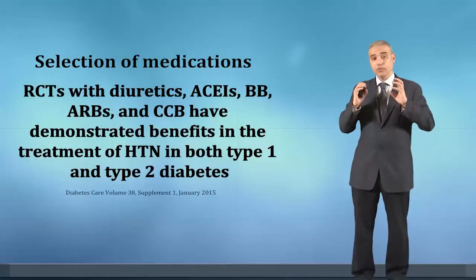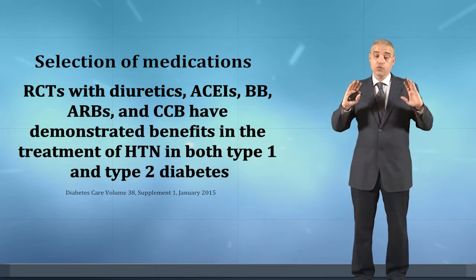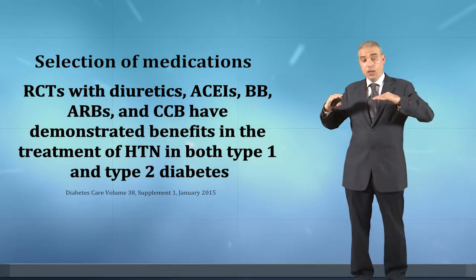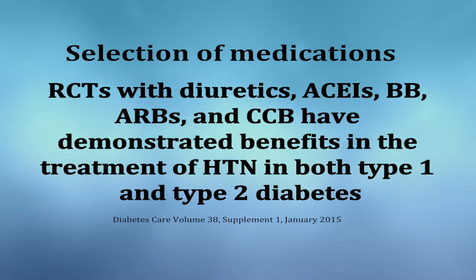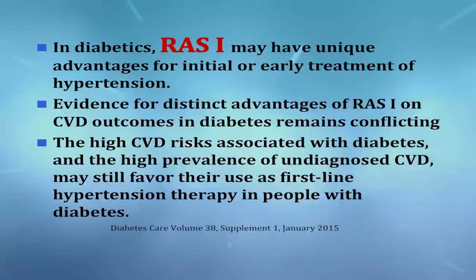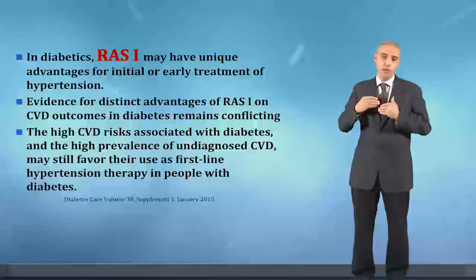For pharmacological management, the priority is achieving blood pressure target regardless of the medication used. In randomized clinical trials — including ALLHAT — diuretics, ACE inhibitors, beta-blockers, ARBs, and calcium channel blockers all provide benefit in treating hypertension in diabetic patients. However, RAS inhibitors — ACE inhibitors and ARBs — have a unique advantage in the diabetic population as they may additionally reduce cardiovascular and renal risk beyond blood pressure lowering, so they can be considered earlier in treatment, especially given the very high cardiovascular risk in these patients.